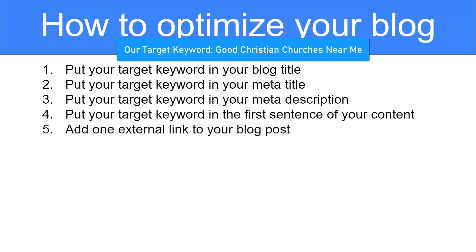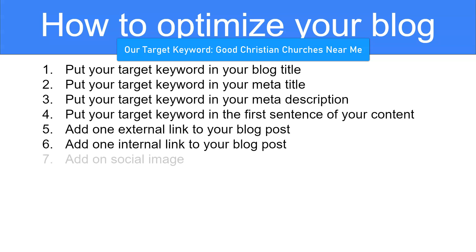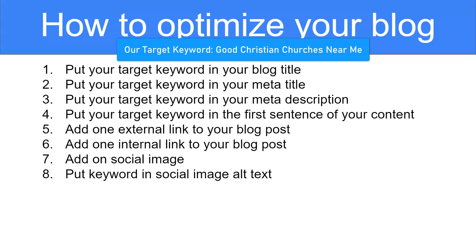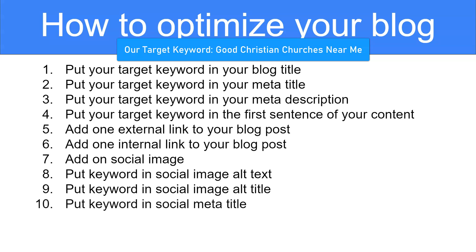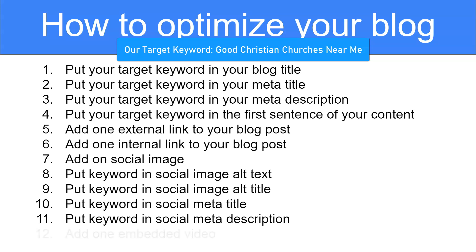Step number five, add one external link to your blog post. Step number six, add one internal link to your blog post. Step number seven, add one social image. Step number eight, put the keyword in the social image alt text. Step number nine, put the keyword in the social image alt title. Step number 10, put the keyword in the social meta title. Step number 11, put the keyword in the social meta description.